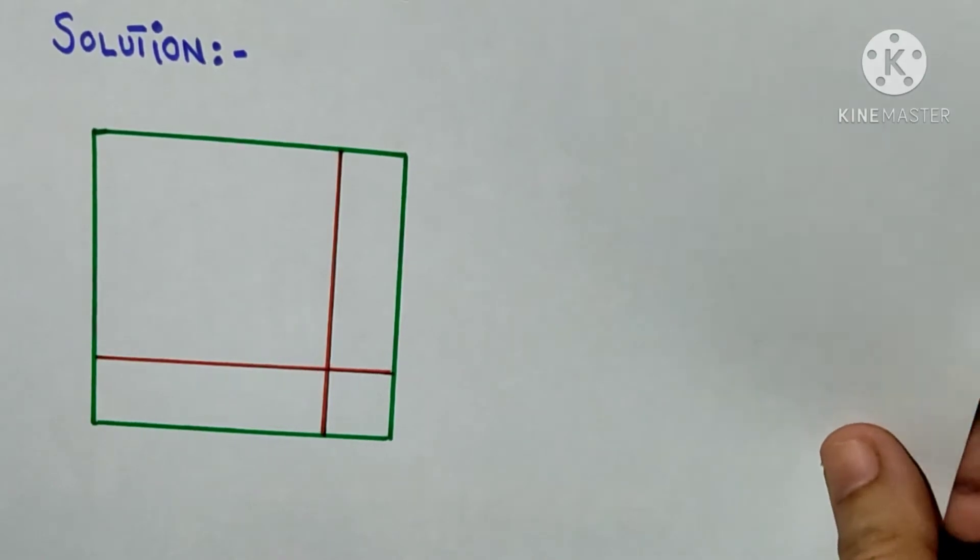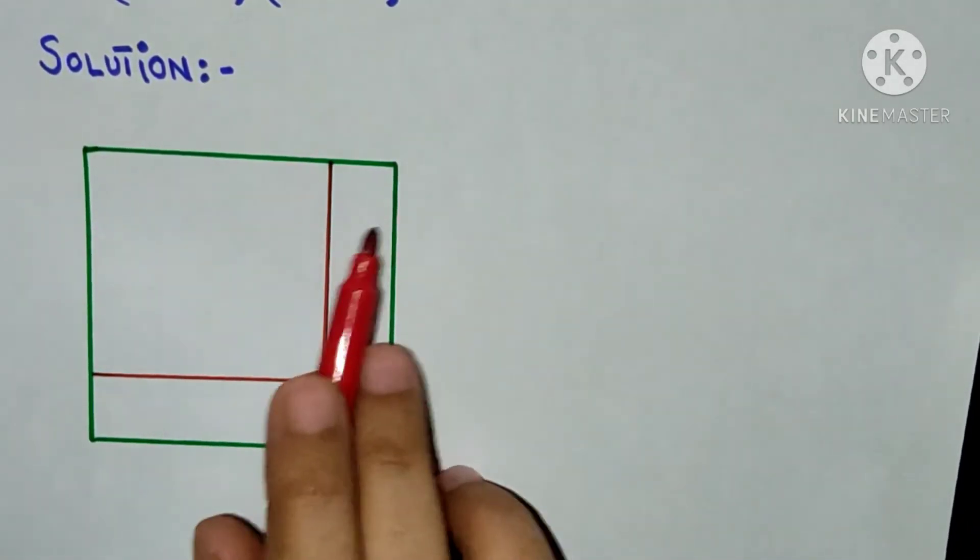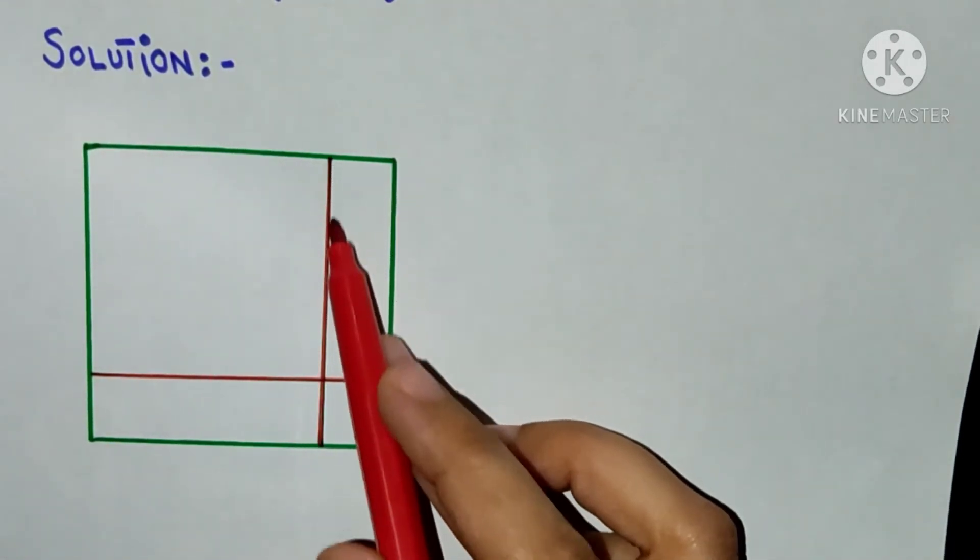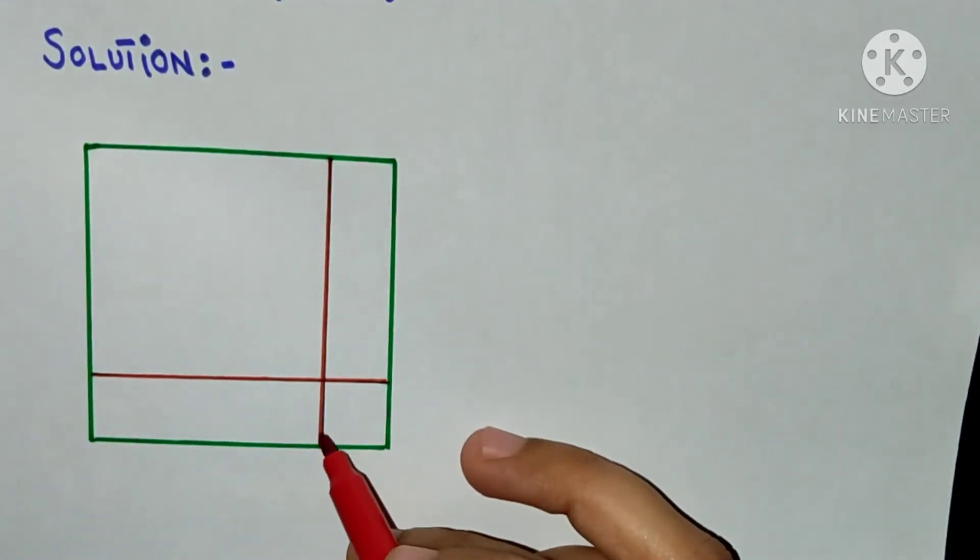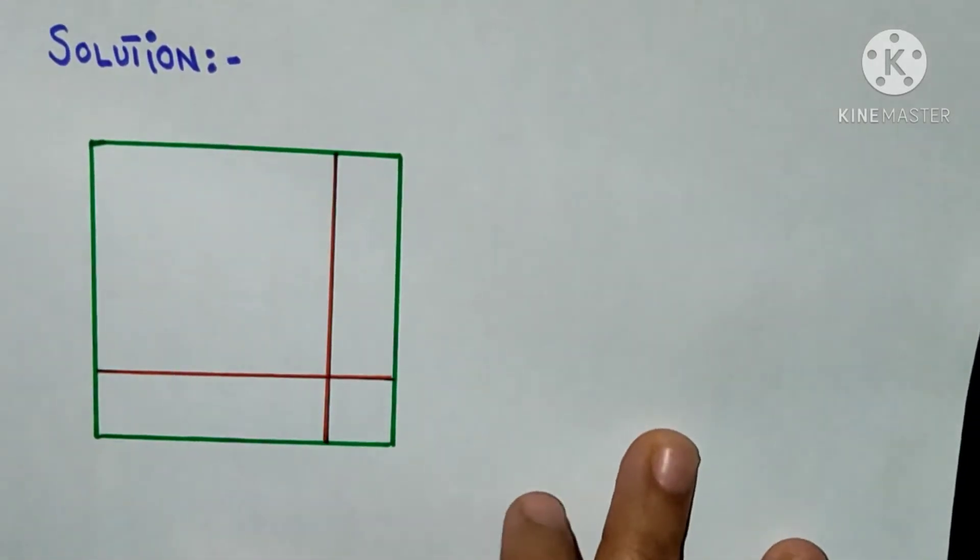I have made a square over here with green lines, and I have drawn here a vertical line with the red pen and a horizontal line in the square with the red pen.